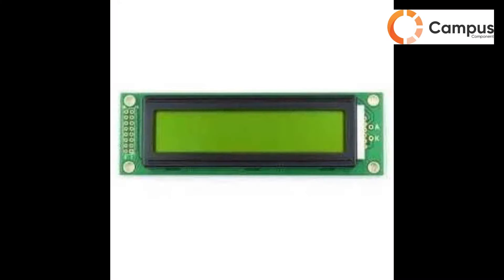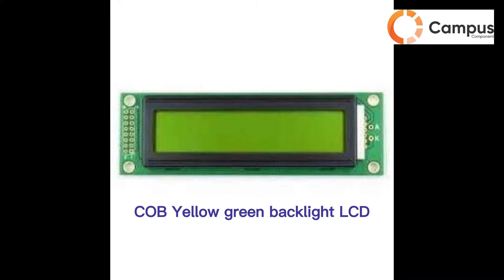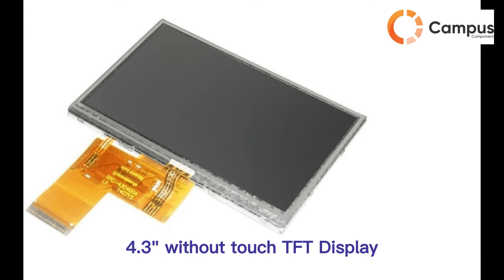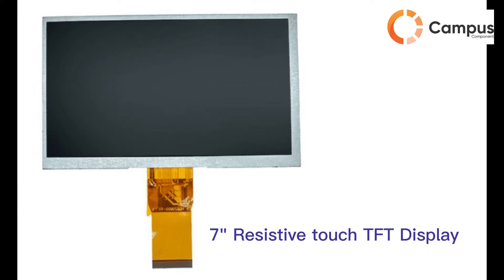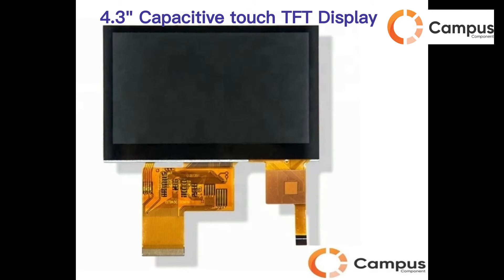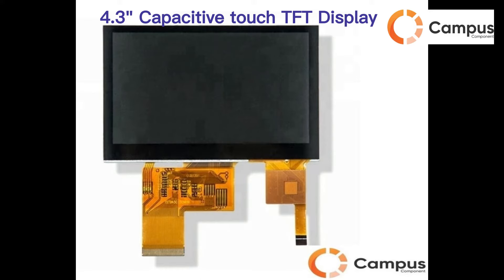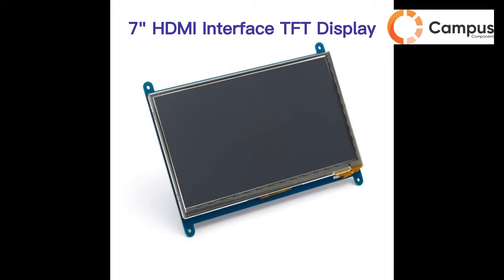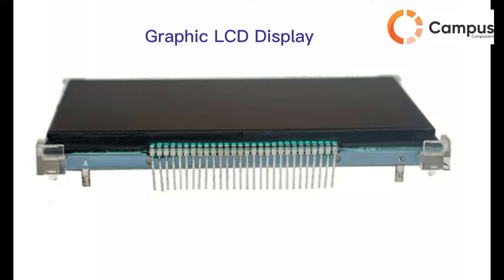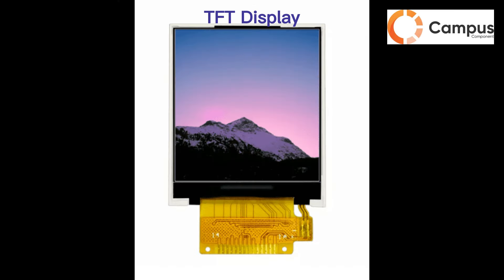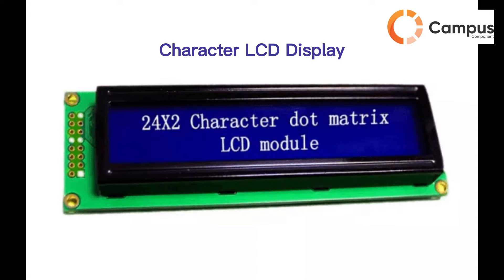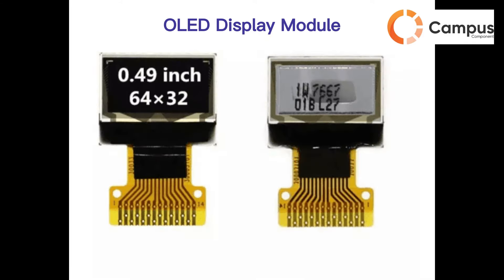Now we will see the various types of display one by one. Some of the commonly used CINDA displays are: COB yellow-green backlight LCD, 4.3 inch without touch TFT display, 7 inch resistive touch TFT display, 4.3 inch capacitive touch TFT display, 7 inch HDMI interface TFT display, graphic LCD display, TFT display, character LCD display, and OLED display module.